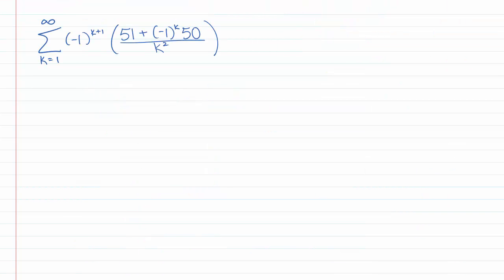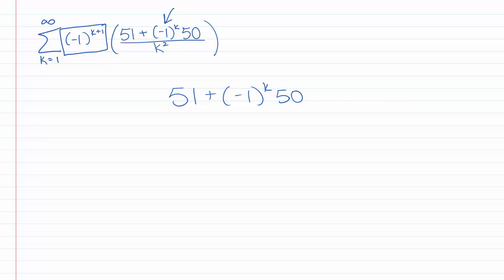Let's try another: the series k goes from 1 to infinity of negative 1 to the k plus 1 times 51 plus negative 1 to the k times 50, divided by k squared. The first question is: is this even alternating? The negative 1 to the k plus 1 is going to make it alternate. But we need to check what's happening to 51 plus negative 1 to the k times 50. When it's positive 1, we get 51 plus 50, which is 101. When it's negative 1, we get 51 minus 50, which is 1. So it's always positive — that's the important thing. So it is really an alternating series.